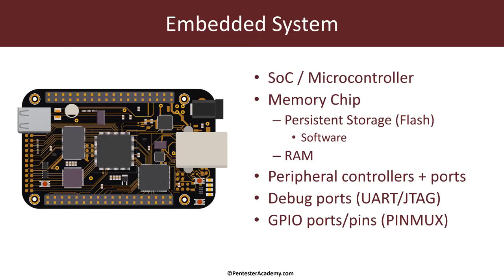If we were to architecturally look at an embedded system, we are going to have the SOC, which is the system on chip or the microcontroller. This is really the brains of the system. The SOC is going to require some kind of persistent storage, such as flash storage, where the operating system or programs it has to run will be stored across reboots. It will also require RAM, where it can load programs at runtime and run.